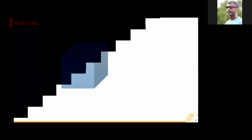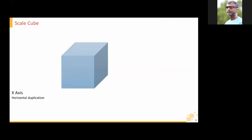Let's focus on what we call the scale cube — a concept for understanding how applications can be scaled. Applications can be scaled on the X-axis, which is horizontal duplication. We saw this earlier with multiple instances of the middle tier spun up on different hosting environments, different VMs or containers or EC2 instances. That allows a certain amount of scaling. The next is the Z-axis, which is data partitioning — what we talked about as sharding. You could partition data by region, for example, with Netflix users in India going to different servers than US users.